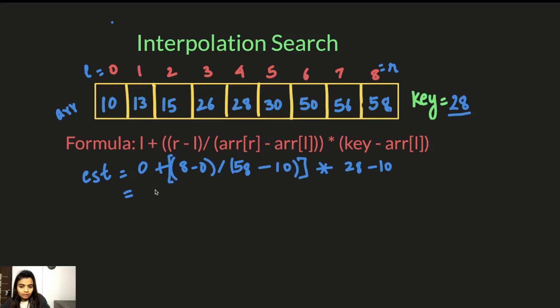So now the value will be 0 plus 8 by 8 minus 0 is 8 divided by 58 minus 10 is 48 into 28 minus 10 is 18.